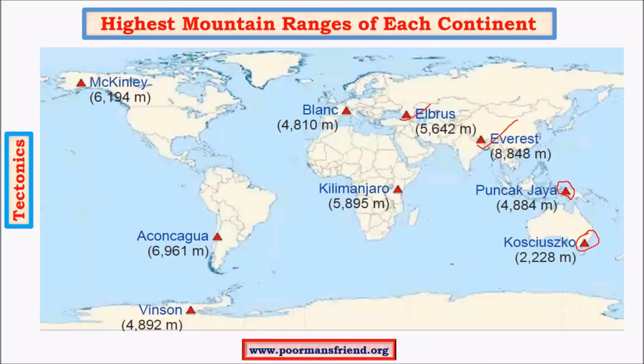Then we have Elbrus in the Caucasus mountains in southern Russia. You can consider this as the highest mountain in Europe because this part of Russia is part of Europe. We also have Mont Blanc near volcanic mountains like Mount Vesuvius etc. Mount Vesuvius is known as the lighthouse of the Mediterranean, and Mont Blanc is very close to it. In North America we have Mount McKinley, which is part of Alaska and is of greater height - about 6000 meters.